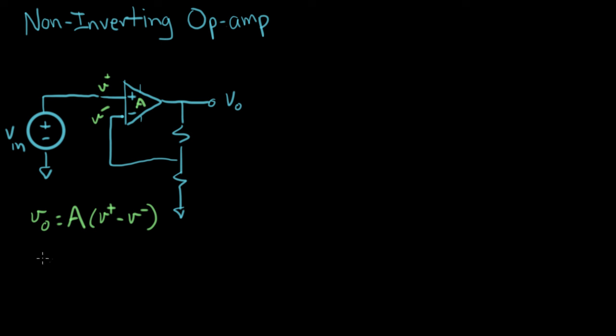And we also know that the currents, let's call them I plus and I minus, equals zero. And that's the currents going in here. This is I minus here and that's I plus. We know those are both zero.